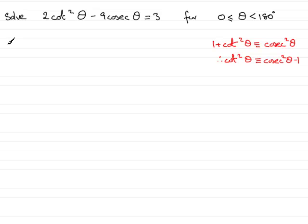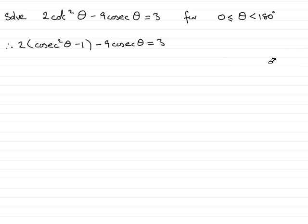We've therefore got 2 multiplied by, instead of cot squared theta, cosec squared theta minus 1. So put that in there, cosec squared theta minus 1. And then we have minus 9 cosec theta equals 3. I'll just remove this now to give us a bit more space.